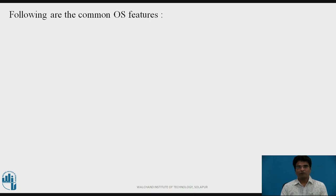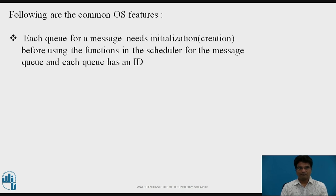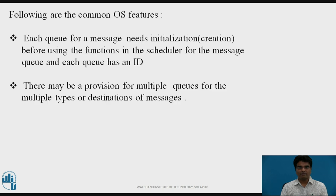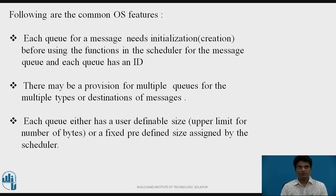Following are the common OS features. Each queue for messages needs initialization — that is, creation — before using the functions in the scheduler for the message queue, and each queue has an ID. There may be a provision for multiple queues for multiple types or destinations of messages. Each queue either has a user-definable size — that is, an upper limit for the number of bytes — or a fixed predefined size assigned by the scheduler.